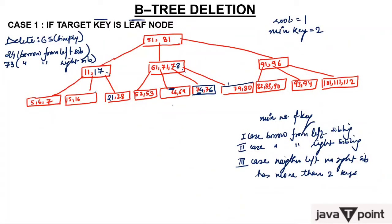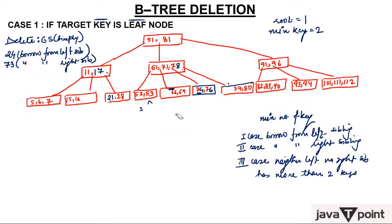If 66 needs to be deleted, it will ask its left sibling — which says 'Sorry, I cannot help you.' It then asks its right sibling — which also says 'Sorry, I cannot help you, I too have a minimum number of keys.' In that case, it goes to the parent — the 'God' of the node. Merging then takes place. When nobody is ready to help, we merge. You have the right to merge either the two left nodes or the two right nodes.